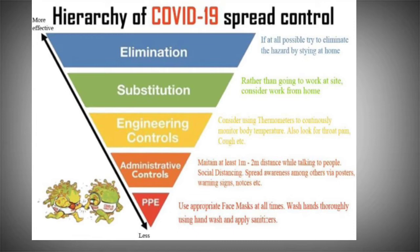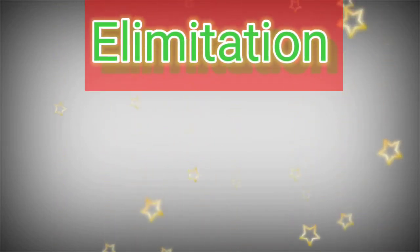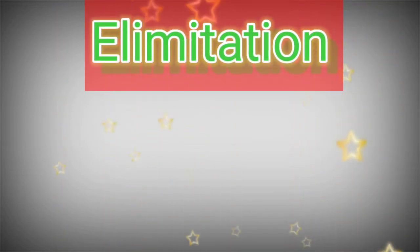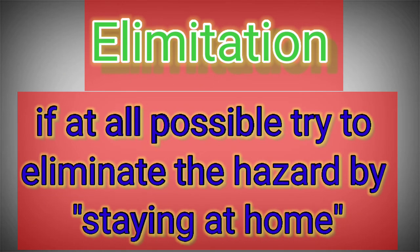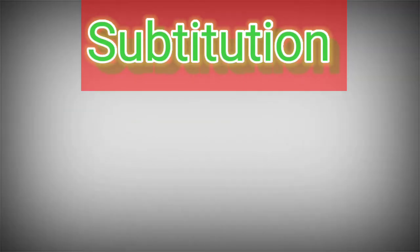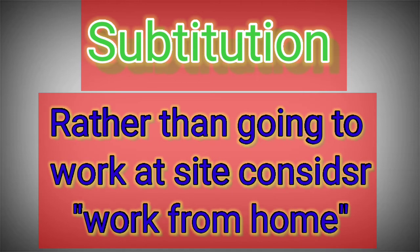Let's start the description of each of the five parts. First is elimination — if at all possible, try to eliminate the hazard by staying at home. Second part is substitution — rather than going to the work site, consider working from home.